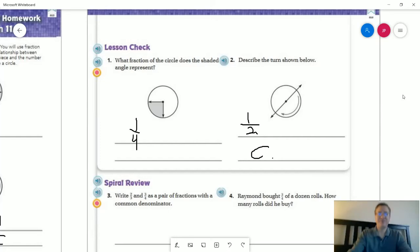So number one on the back, we have a one quarter turn, and that's all they're asking for. We're not asking if we're going this direction or this direction. Number two, describe the turn. So we were going a half turn, and we are going clockwise.